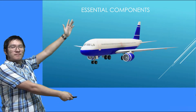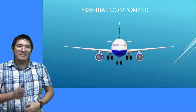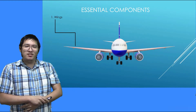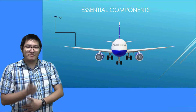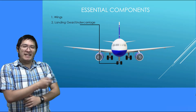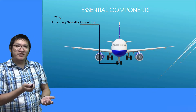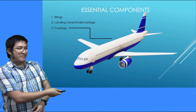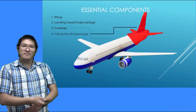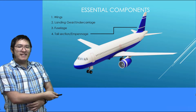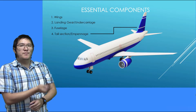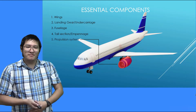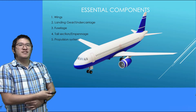Alright, so these are the essential components of an airplane. First off, you have the wings. Then the landing gear, or the undercarriage. Next up is the fuselage. And then the tail section, or empennage — empennage is just a fancy French word for tail section. And finally, a propulsion system.